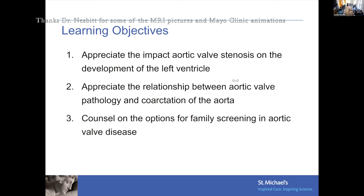If you have an adult with a bicuspid aortic valve, I would recommend discussing the higher recurrence risk with the patient and having a conversation about screening options with the family. It's not that everyone must be screened — it depends on the family context. If there is also aortic pathology like aortic aneurysm or coarctation, I would definitely recommend screening.